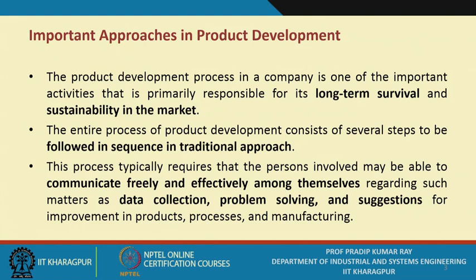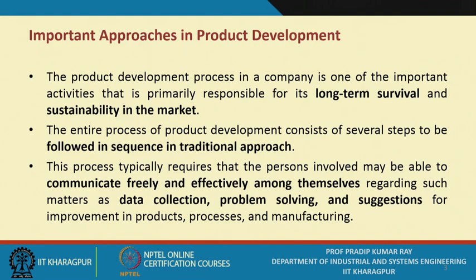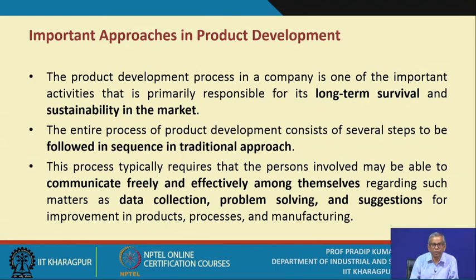Serial and concurrent engineering are used for product development purposes, covering phases such as product design, process design, and manufacturing. For product development, either you opt for a serial engineering approach or a concurrent engineering approach. The product development process is one of the most important activities for any company, primarily responsible for its long-term survival and sustainability in the market. Today, sustainability becomes the main objective — you have to create a production system that is sustainable.